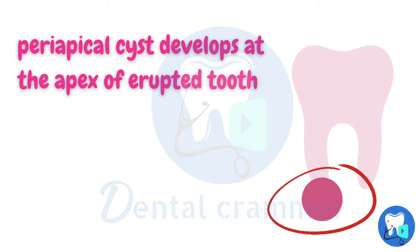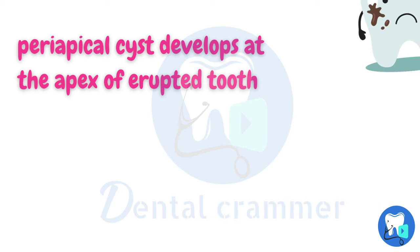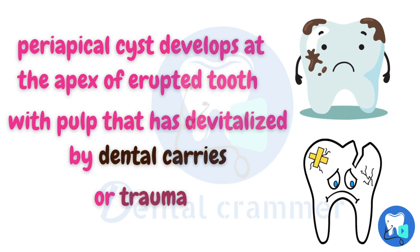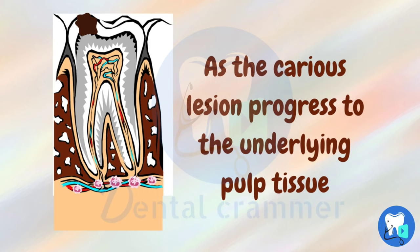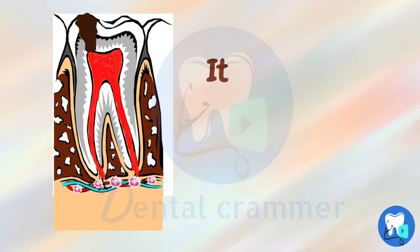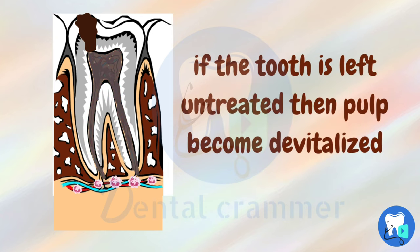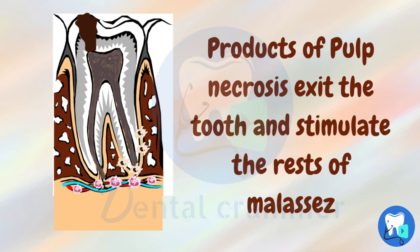Periapical cyst develops at the apex of an erupted tooth that has been devitalized by dental caries or trauma. As the caries lesion progresses to the underlying pulp tissue, it leads to inflammation of pulp. If the tooth is left untreated, the pulp becomes devitalized and the products of pulp necrosis exit the tooth into the periodontium, stimulating the rests of molasses.